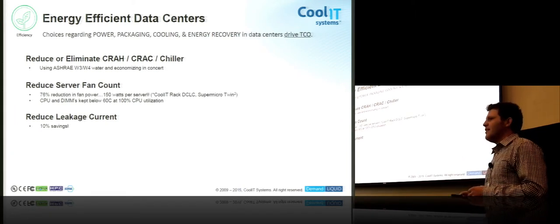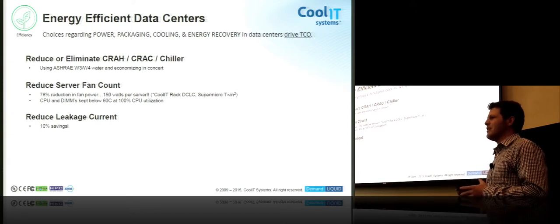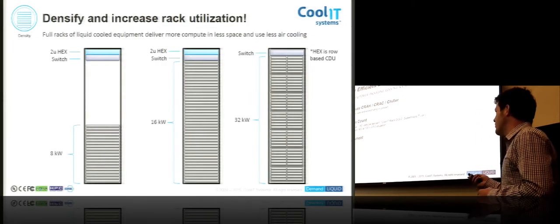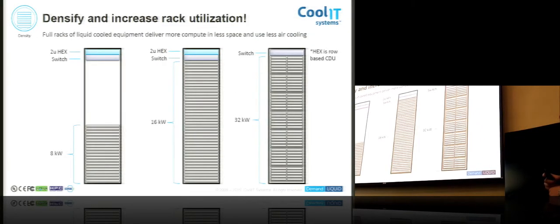We also have reduced leakage current. So by running the components cooler, cleaner, we're going to save some electricity there as well. Your mileage varies here. It depends on how big a server you're using. This was on a dual CPU, I believe dual FICO processor unit.